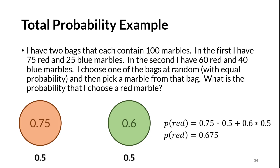Here's an example. I have two bags each containing 100 marbles. The first has 75 red and 25 blue marbles; the second has 60 red and 40 blue marbles. I choose one bag at random with equal probability and then pick a marble. What is the probability of choosing a red marble? You have a 75% chance of picking red given the first bag, and 60% given the second bag. The chance of picking either bag is 0.5. So the probability of picking a red marble is a simple average: 0.675.